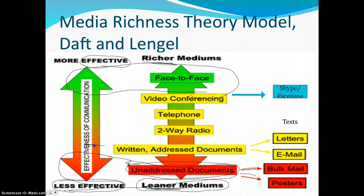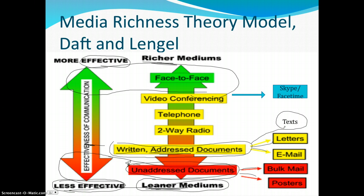Going up the scale, we move into the yellow section — less effective but a little better than unaddressed documents. This is written addressed documents. What makes it better is that this is addressed to somebody. This generally includes letters, emails, and I've included text messages here as well, because with the changing of technology, I believe text messages fall into written addressed documents. We know it's a little bit more effective, but we know it's not the most effective or most rich, because you lose a lot of information in these written addressed documents.